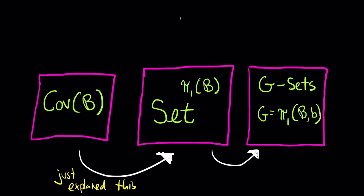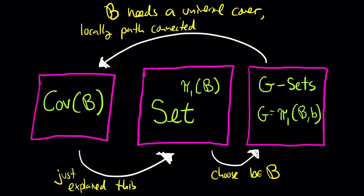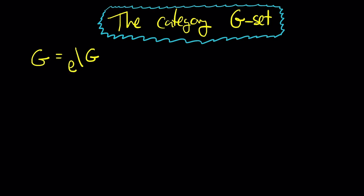We already explained how choosing a base point little b gives a passage from functors on the fundamental groupoid to G-sets, where G is the fundamental group of the base at little b. To go from G-sets back to covering spaces, we need some assumptions on B: B needs a universal cover, meaning B must be locally simply connected, locally path connected, and connected.